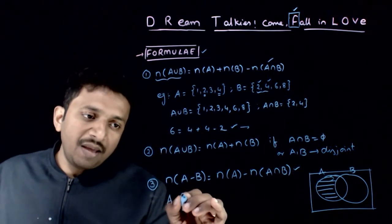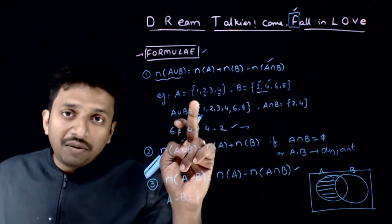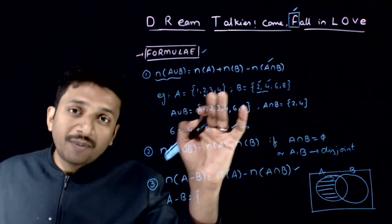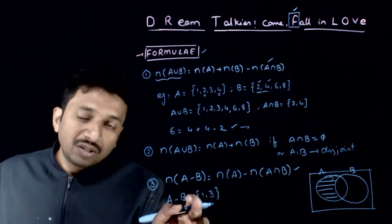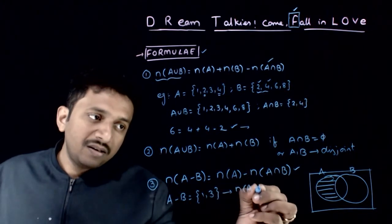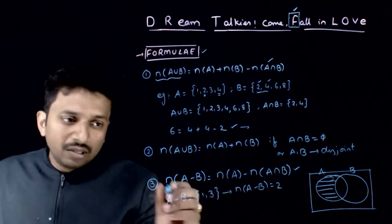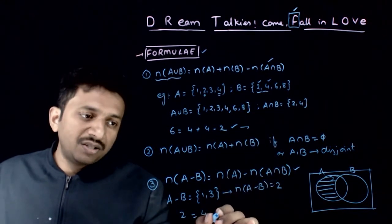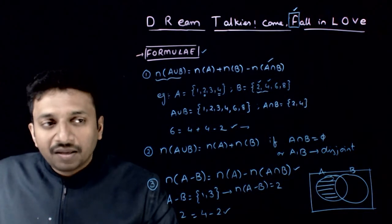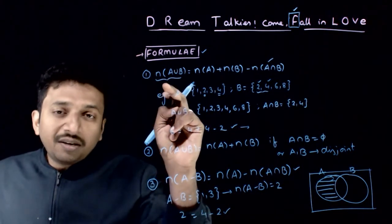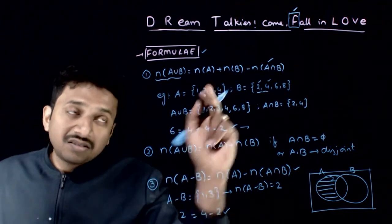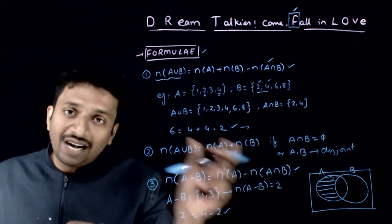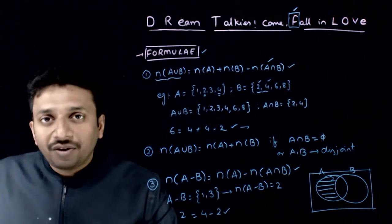What is n(A−B)? A minus B means from A you subtract the common elements — I want the elements of A which are not present in B. Since 2 and 4 are present in B, I remove them and get {1, 3}. So n(A−B) = 2, which equals n(A) − n(A∩B) = 4 − 2. So the first three properties are: n(A∪B) = n(A) + n(B) − n(A∩B); if disjoint, n(A∪B) = n(A) + n(B); and n(A−B) = n(A) − n(A∩B).